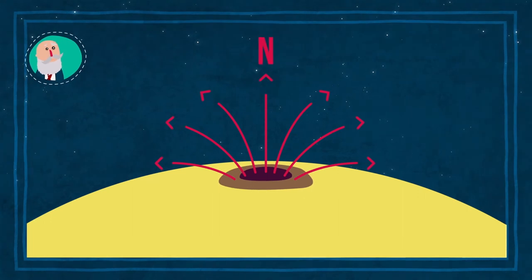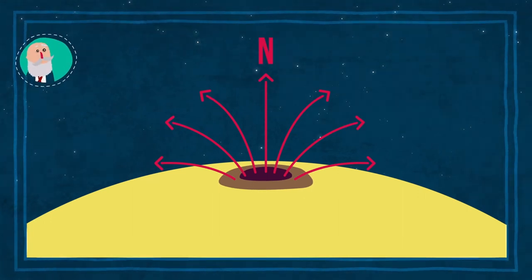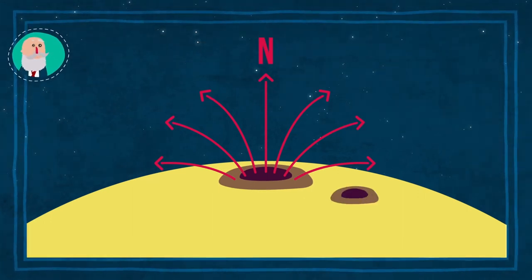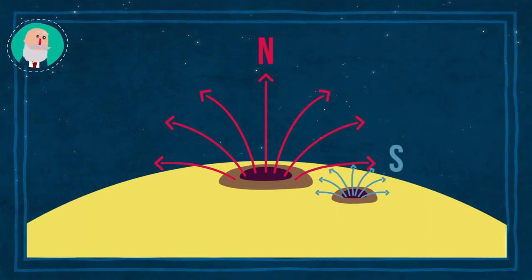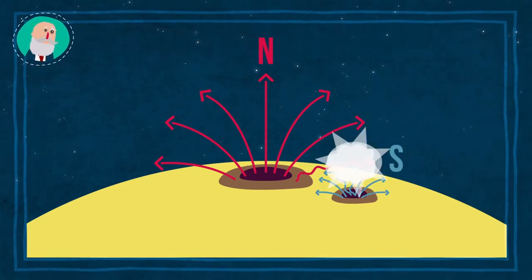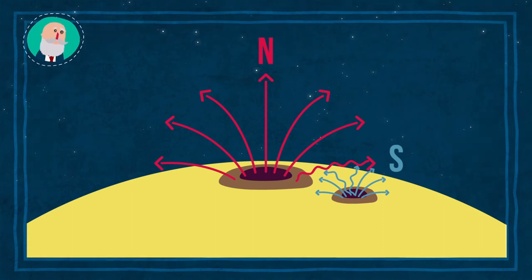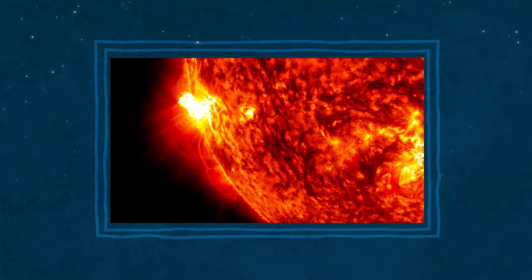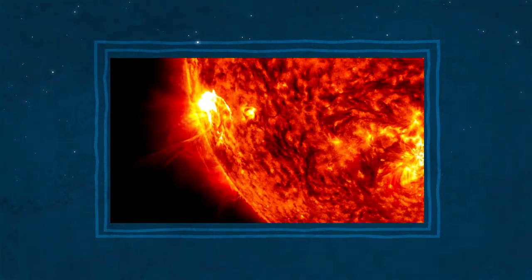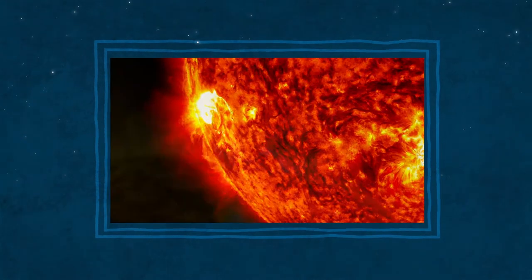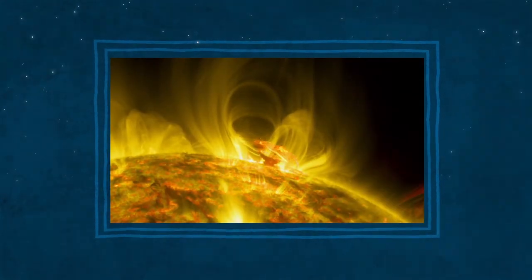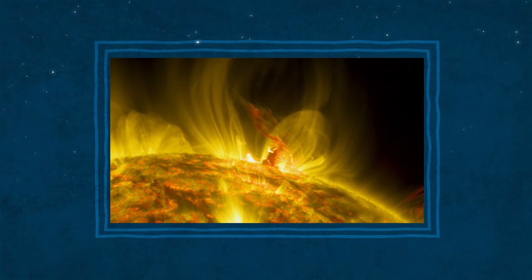Como ya hemos visto en otros episodios, las manchas solares tienen campos magnéticos intensos. Cuando estos campos se recombinan, liberan gran cantidad de energía, radiación y partículas, produciendo las llamadas fulguraciones solares. Son los fenómenos más energéticos del sistema solar, pero duran solo unos minutos.